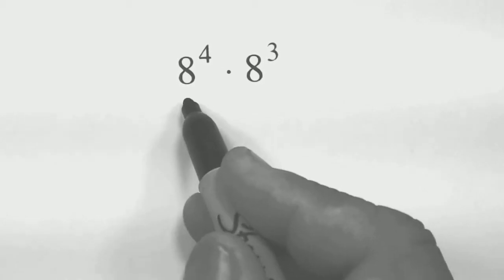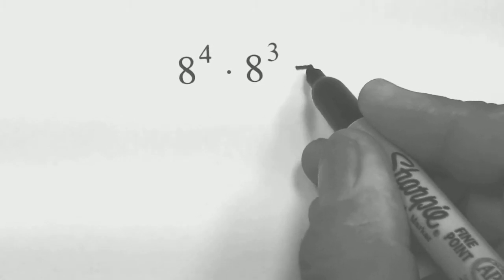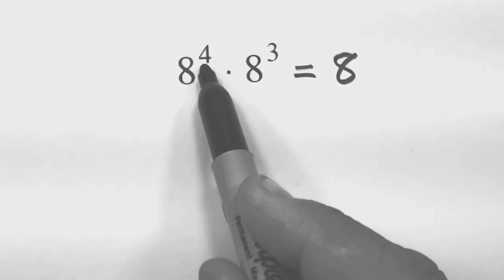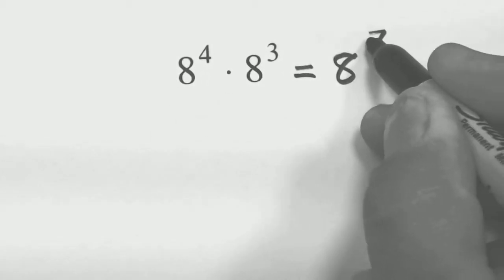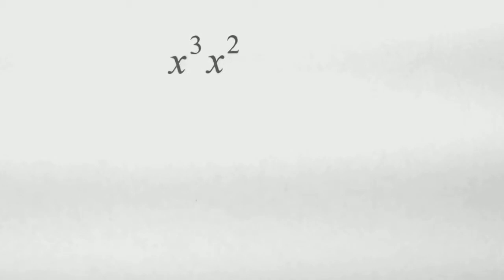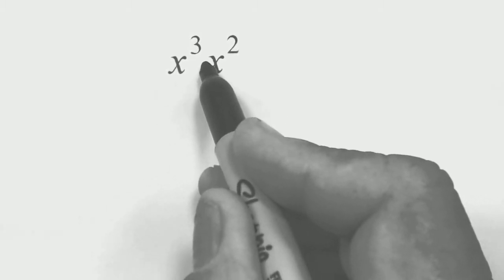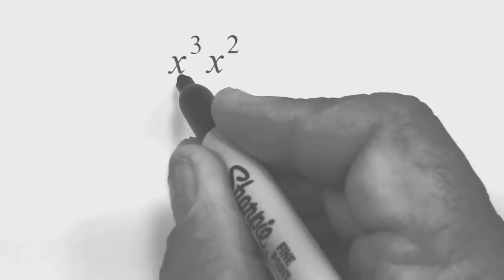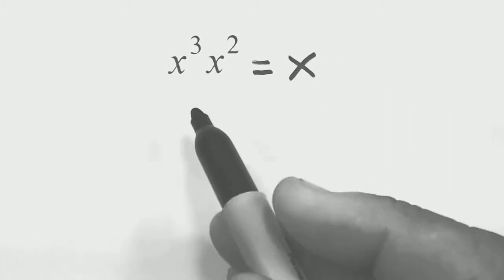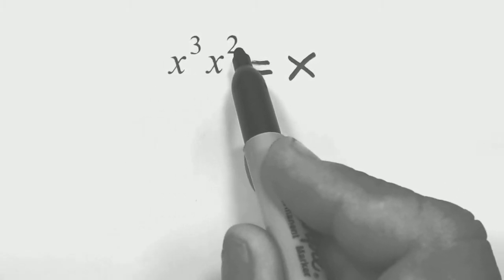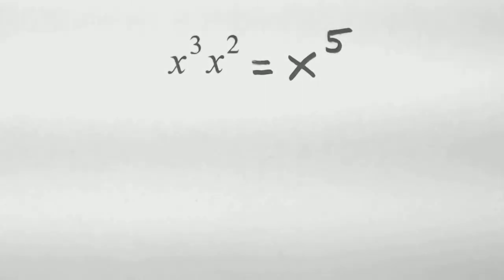The same process works for this next example. Instead of writing out 8 to the 4th and 8 to the 3rd individually, I note the same base — 8's — so I've got 4 of them here and 3 more here, giving a total of 7, so the answer is 8 to the 7th power. This works even with variables: x cubed times x squared — variables next to each other means multiplying. I've got 3 x's and 2 more, totaling 5, so this is x to the 5th.